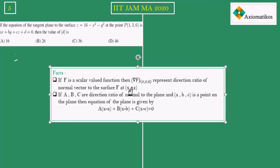So whenever you find the gradient of a surface, you are finding the direction ratios of the normal vector. Note number two: if a, b, c are direction ratios of the normal to a plane and (A, B, C) is a point on the plane, then the equation of the plane is given by a(x−A) + b(y−B) + c(z−C) = 0. We need these two things to find the equation of the tangent plane.